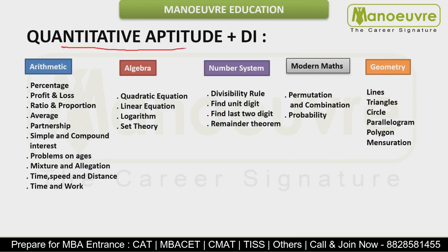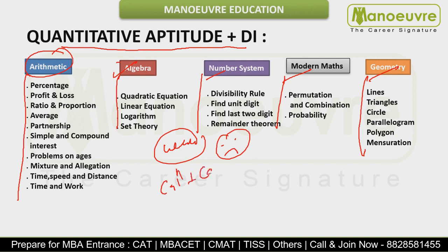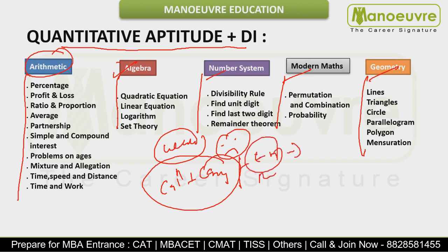First is Quant with DI — topics include Arithmetic, Algebra, Number System, Modern Maths, and Geometry & Mensuration. Ye aapke detailed topics hain. Jin logo ka maths weak hai, unhe basic calculation par pehle kaam karna chahiye, uske baad concepts. Yeh do agar aapka accha hoga toh aap maths ke questions deal kar paoge, uske baad easy to moderate level questions practice karo aur shortcuts seekho.